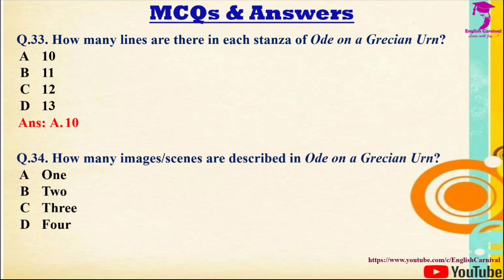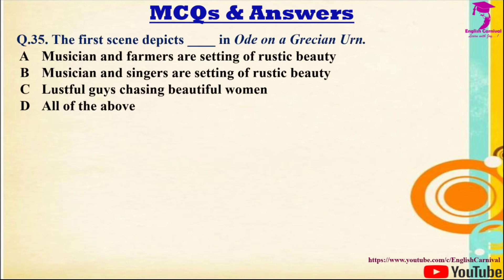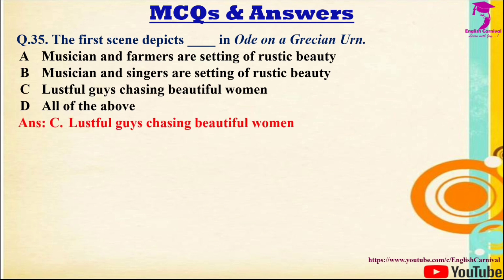Question 34: How many images or scenes are described in Ode on a Grecian Urn? The correct answer is C — three images or scenes. Question 35: The first scene depicts — in Ode on a Grecian Urn. Options: A) Musicians and farmers in a rustic setting, B) Musicians and singers in a rustic setting, C) Lustful men chasing beautiful women, D) All of the above. The correct answer is C — lustful men chasing beautiful women.